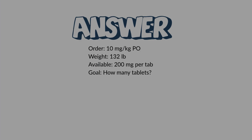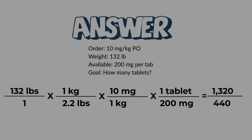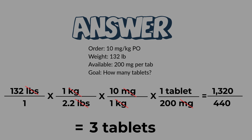Here's the full four-step dimensional analysis setup: 132 pounds over one, times one kilogram over 2.2 pounds, times 10 milligrams over one kilogram, times one tablet over 200 milligrams. Let's cancel our units — pounds, kilograms, and milligrams all cancel, leaving tablets. Now solve it: multiply across the top and bottom, then divide. Your answer is three tablets. No rounding needed — this is a clean, exact dose.